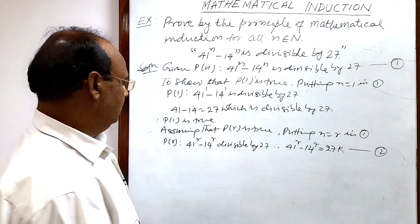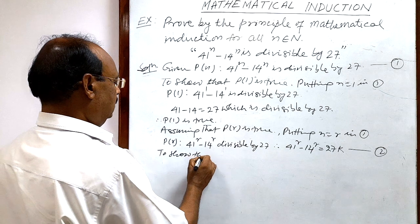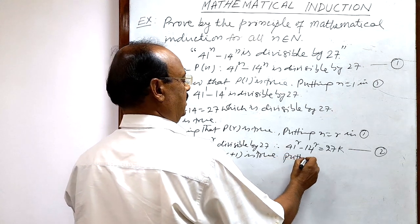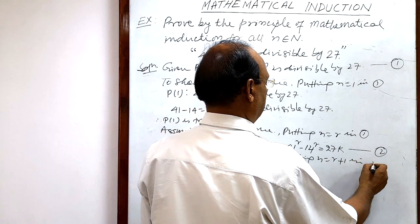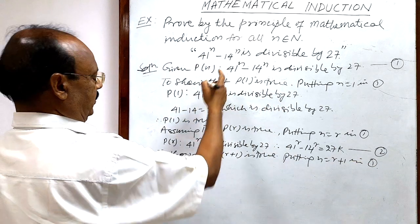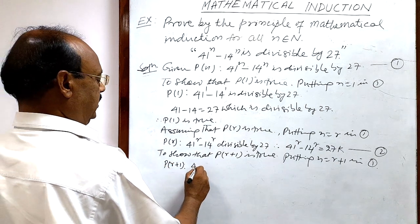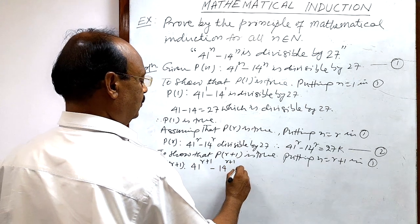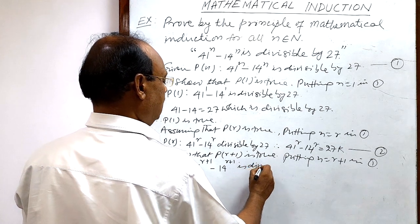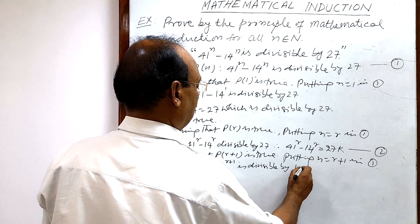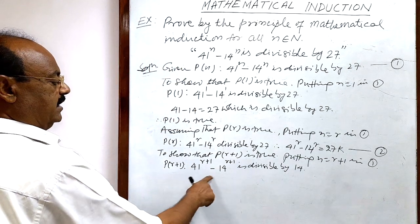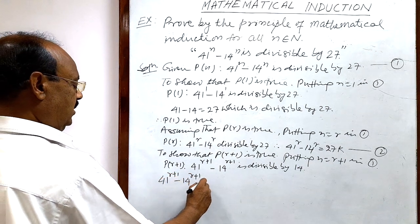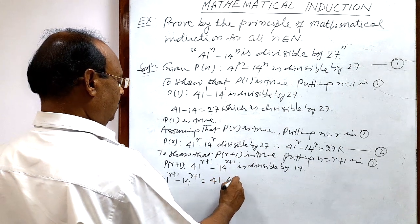Third step: we have to show that P(r+1) is true. For this, we put n equal to r+1 in relation number one. We get P(r+1): 41 to the power (r+1) minus 14 to the power (r+1), which equals 41 into 41 to the power r minus 14 into 14 to the power r.